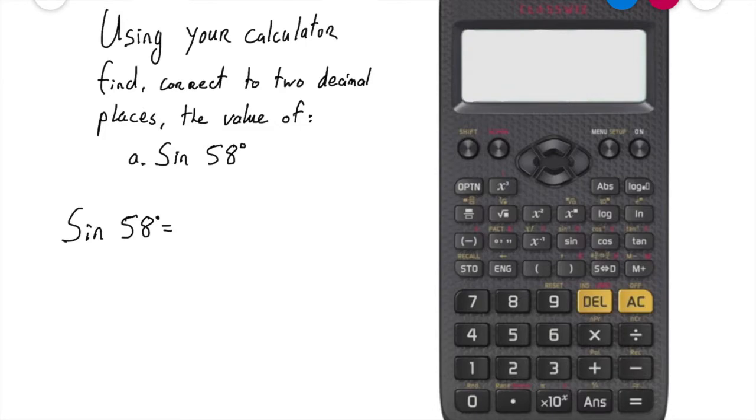So let's get stuck into it folks. I'm using here a Casio scientific calculator. What I do is I first type in sine (s-i-n), which is there in your calculator, and then I type in the angle that we're looking for.